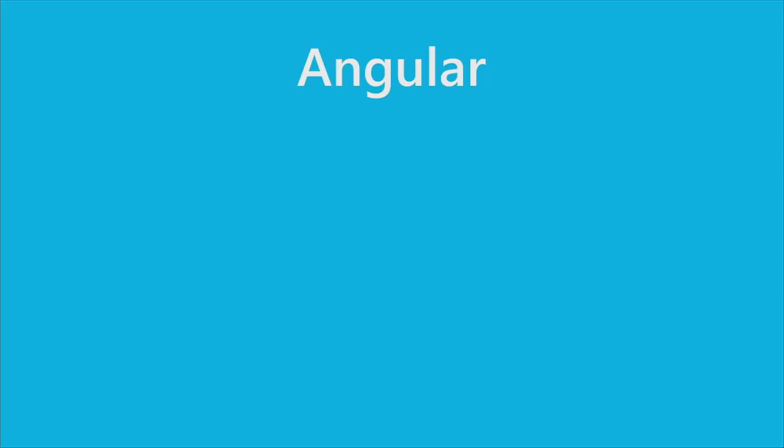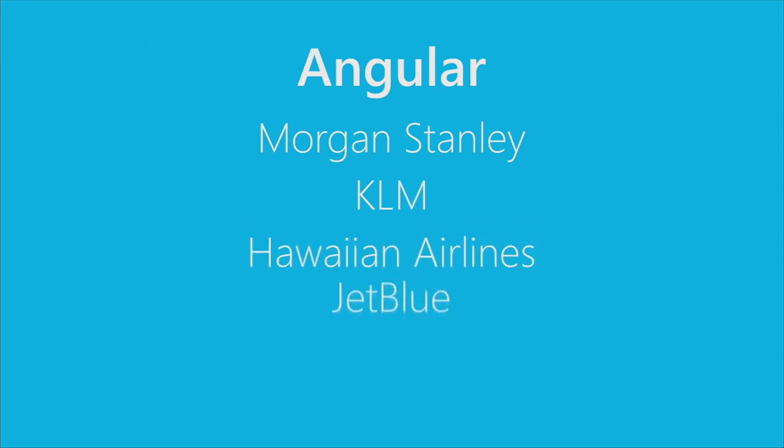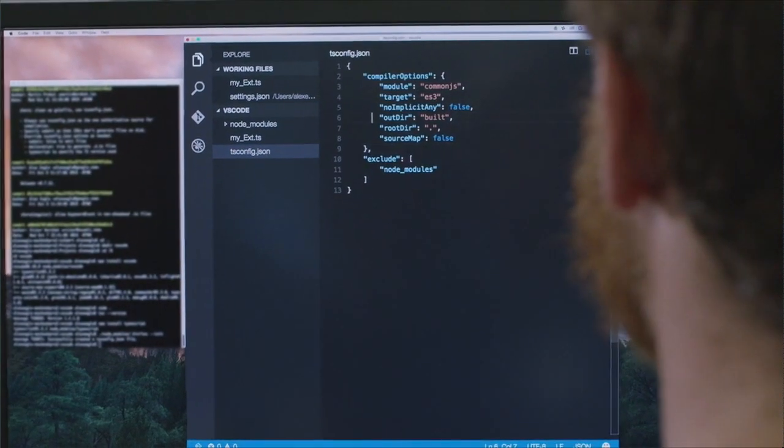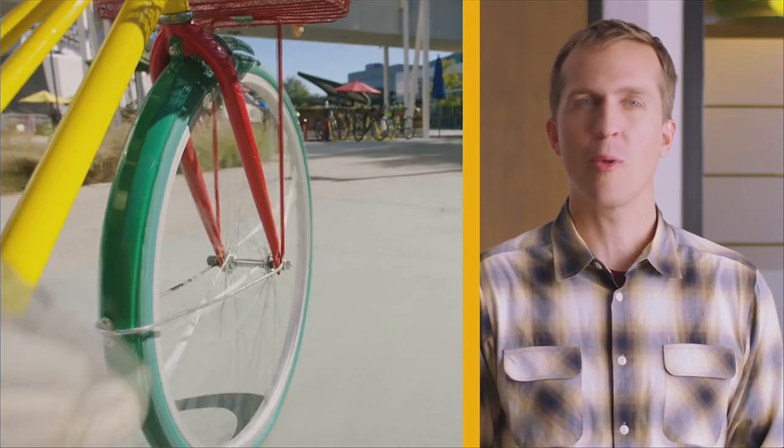To me, Angular is important because it lets people be more productive and think about what they want to build rather than worrying about the intricacies of the browser. Some of the largest companies in the world build their web presences using Angular — companies like Morgan Stanley, KLM, Hawaiian Airlines, JetBlue, and Disney. Angular is a JavaScript development framework that is an open source project from Google built in collaboration with Microsoft. A lot of people are surprised when they hear that we've built Angular with Microsoft. Angular is built with TypeScript, which is a language Microsoft provided to improve JavaScript.